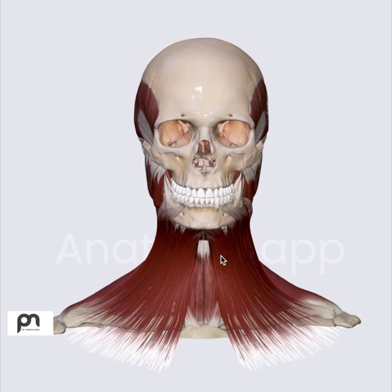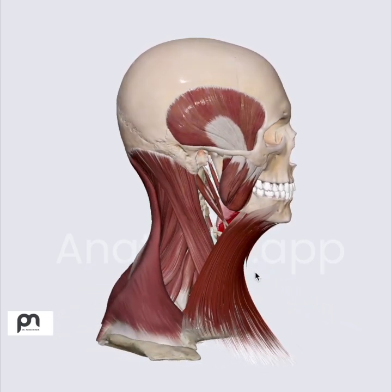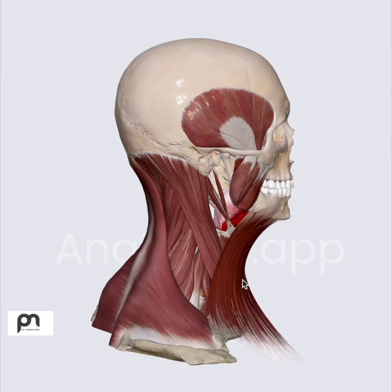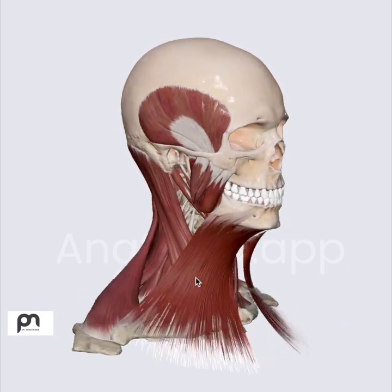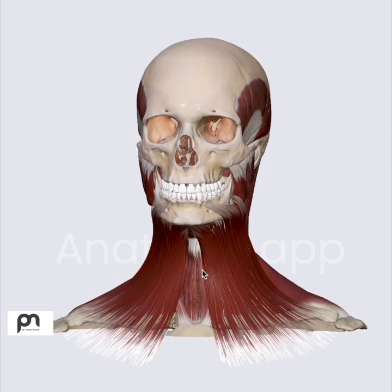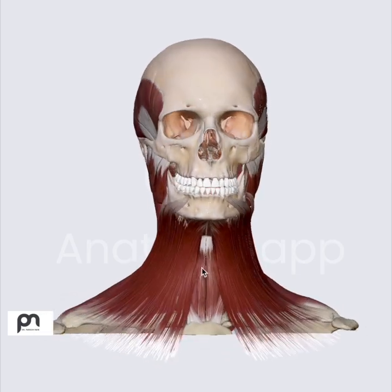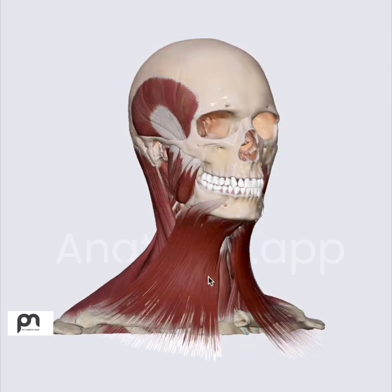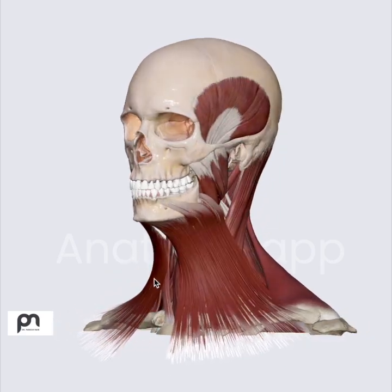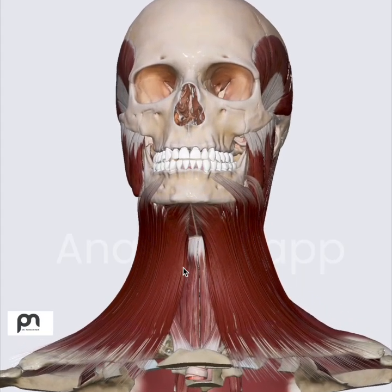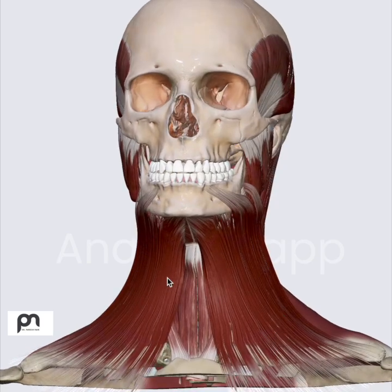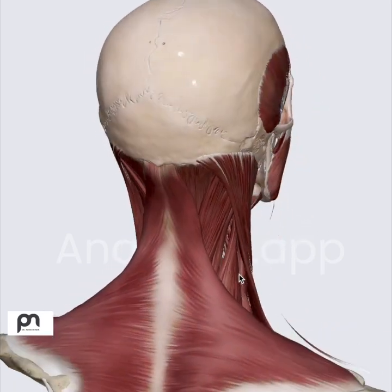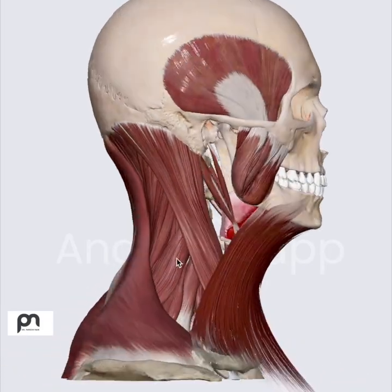As I said, the neck is a very compact structure and there are a lot of muscles. These muscles are mainly responsible for movement of the head. They also help in swallowing, breathing, and most importantly, they are useful for us as surgeons — we need to know the planes, which actually helps us during surgery. The neck muscles consist of three main groups: anterior, lateral, and posterior, based on their position in the neck.